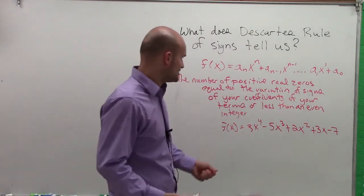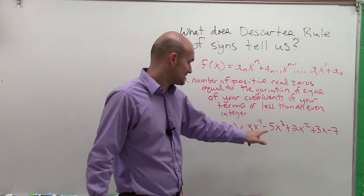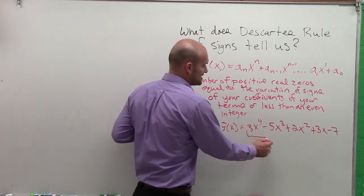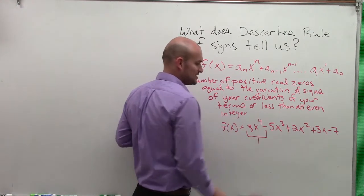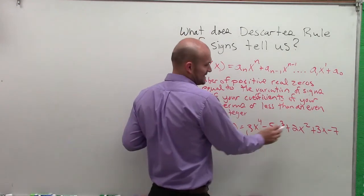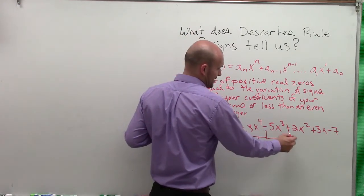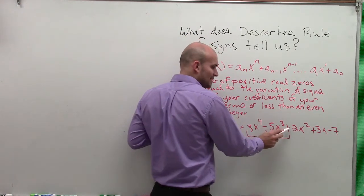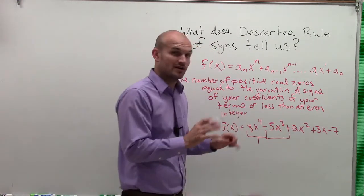Okay, so what this means is any variation of sign, you can see this is a positive 3x to the 4th. So since that's a positive and that's a negative, I have a variation of a sign. Here I have a negative to a positive, that's another variation of a sign. However, from here I have a positive to a positive, there's no variation.